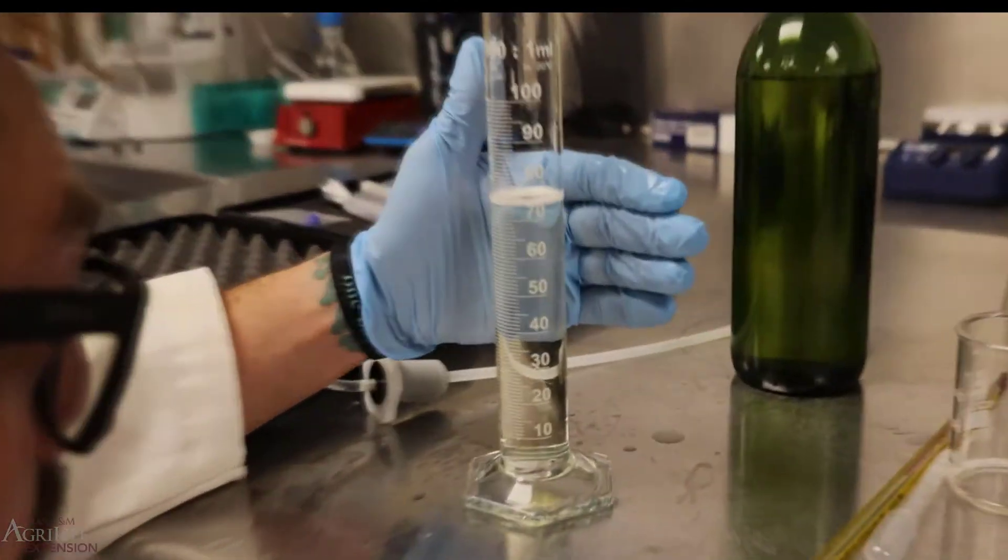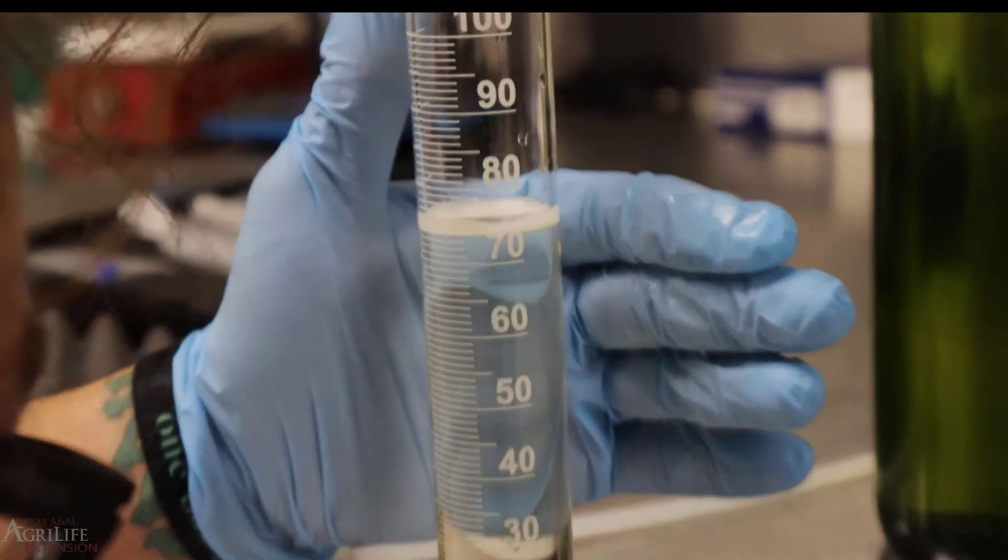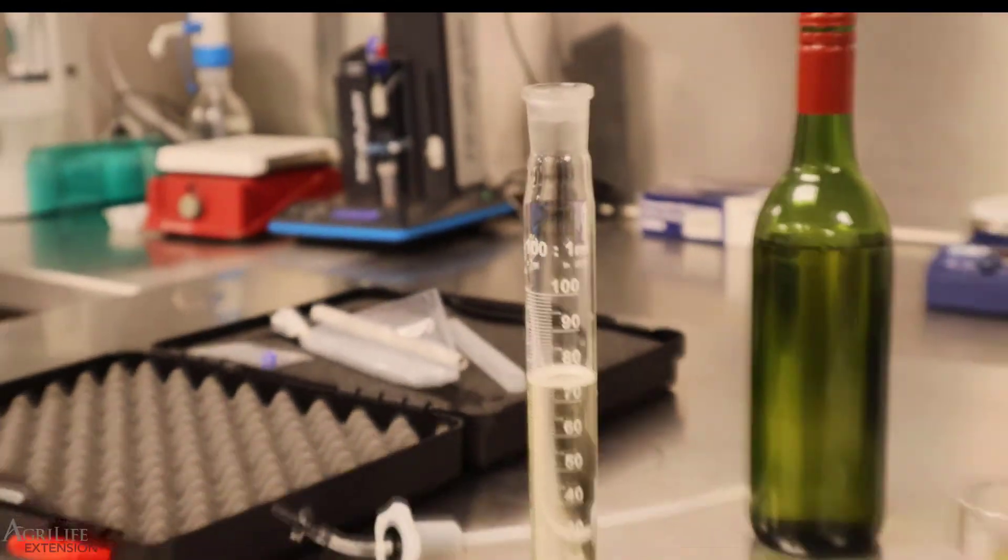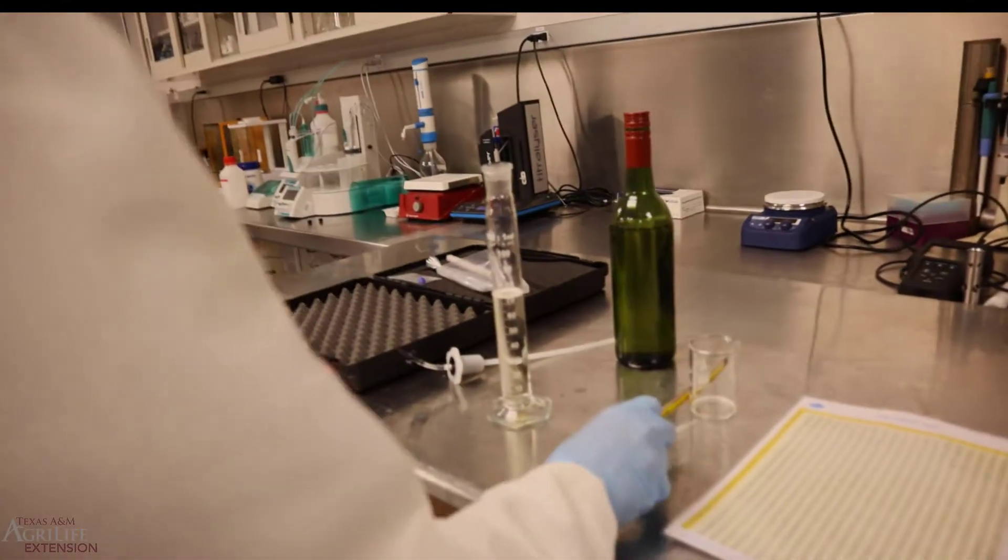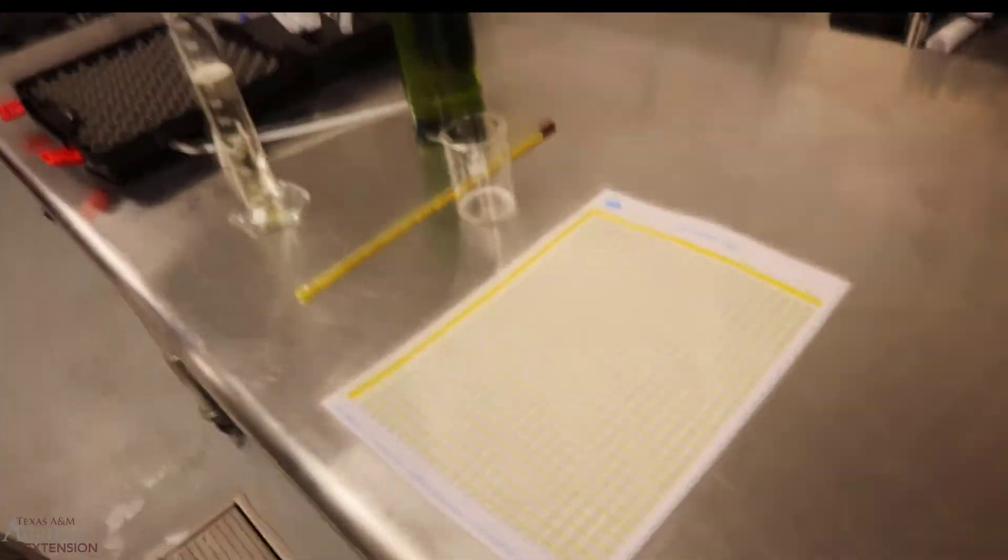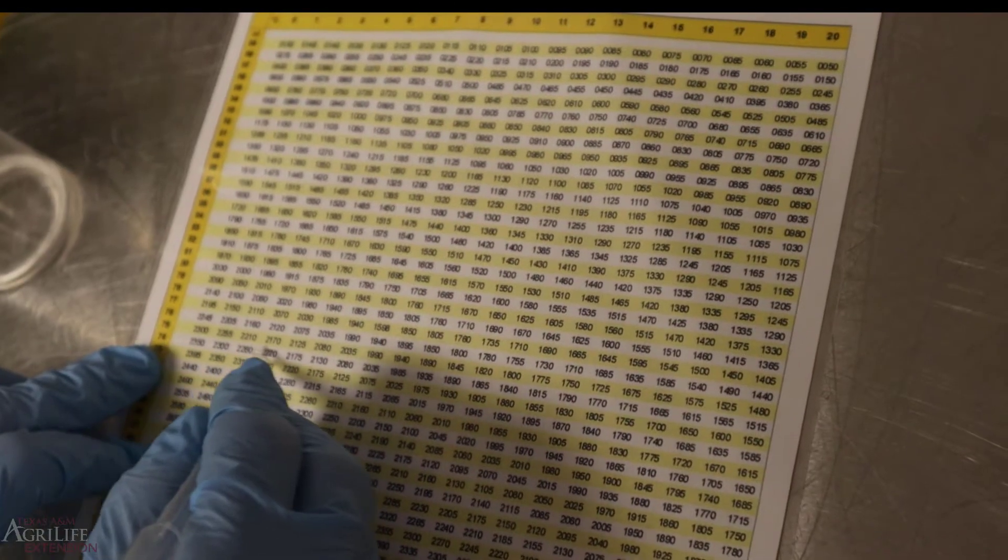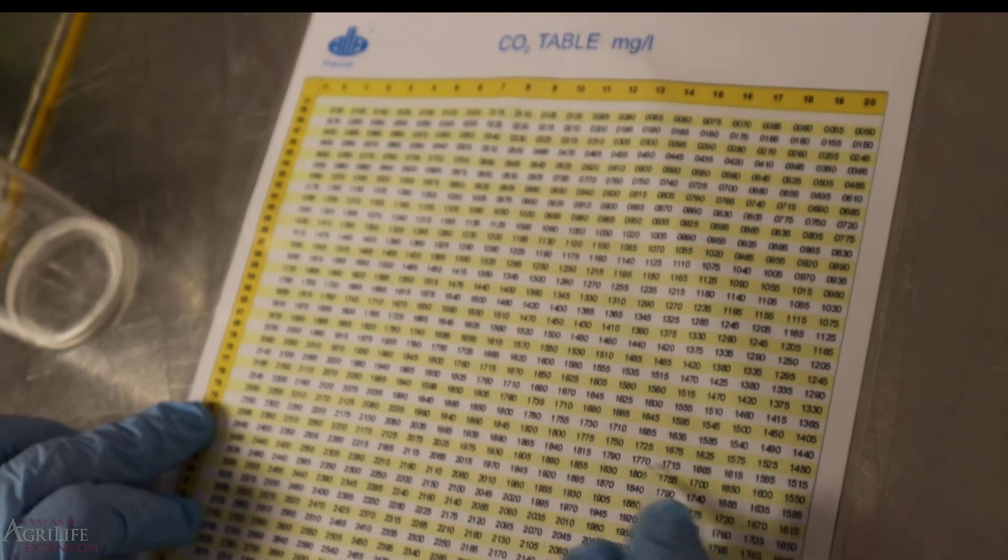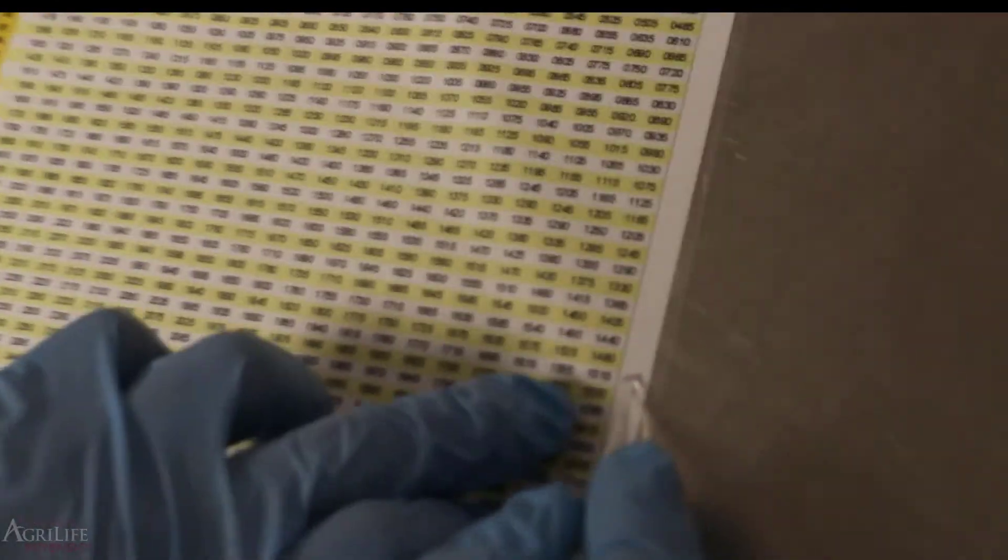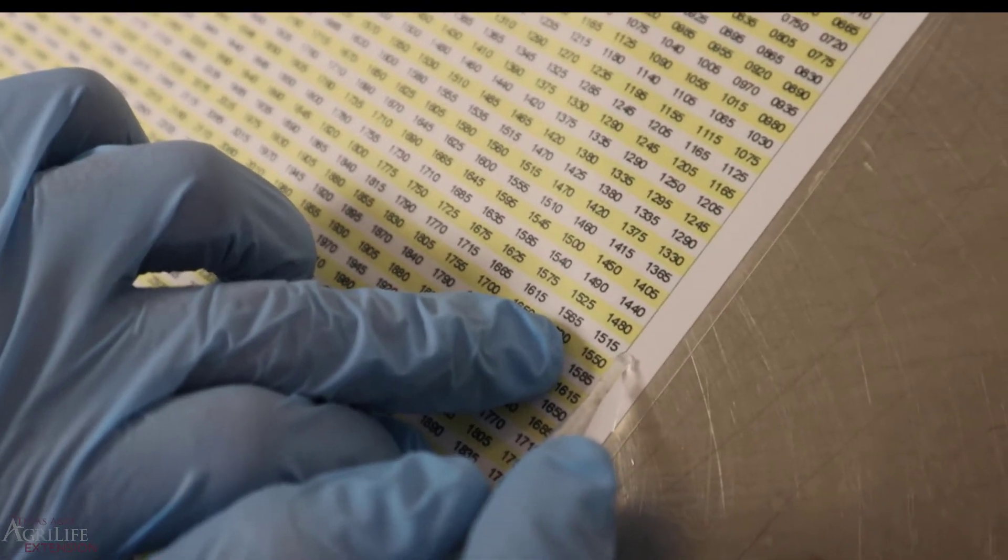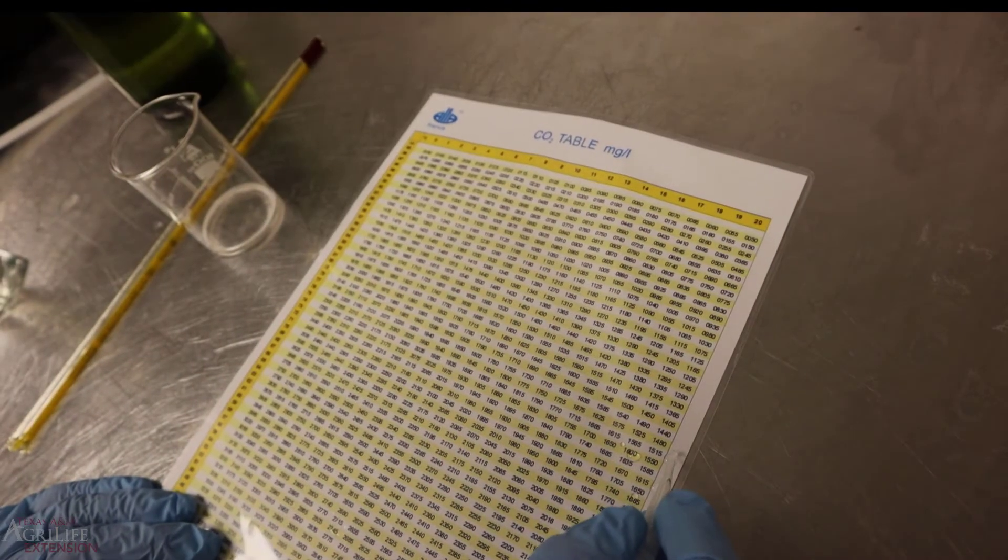And our reading looks to be about 74 mils. So with our temperature of 23 degrees Celsius, 74 mils, we'll come over to our chart. We'll find our mils. 74, 23 degrees. Go over and it's off our chart. So this bottle of wine looks like it is at 1,400 mils of CO2.